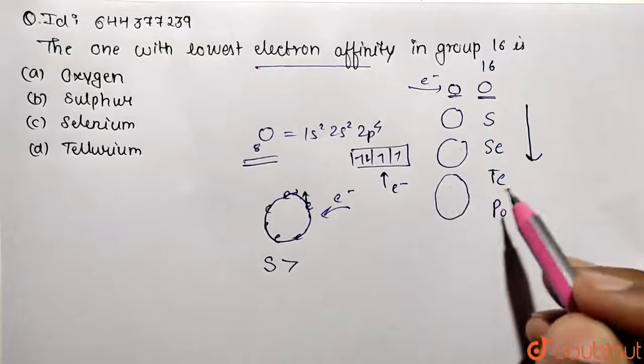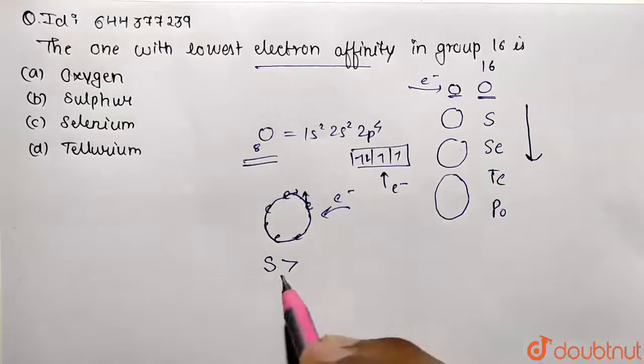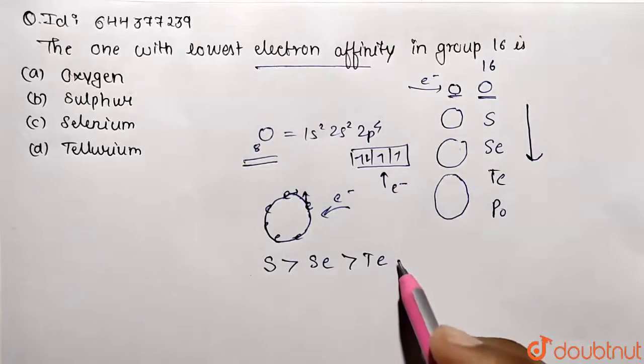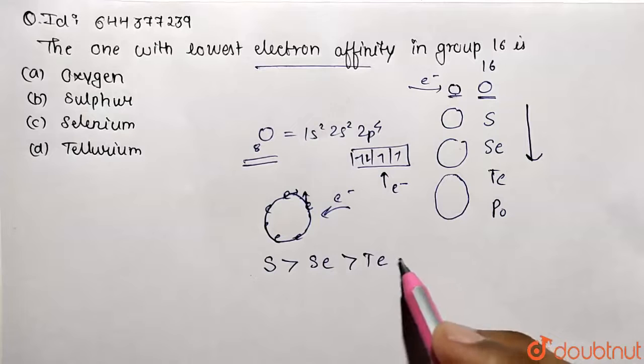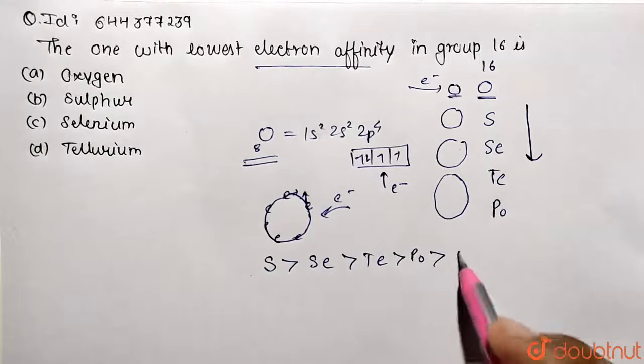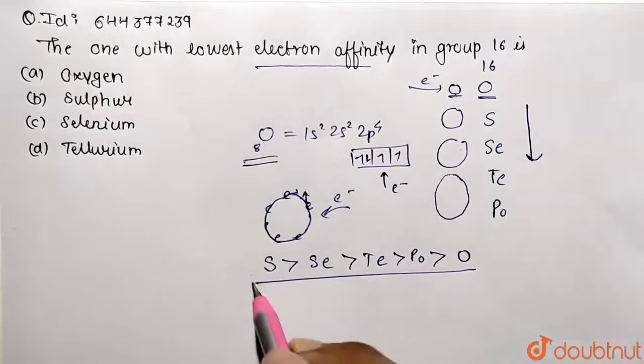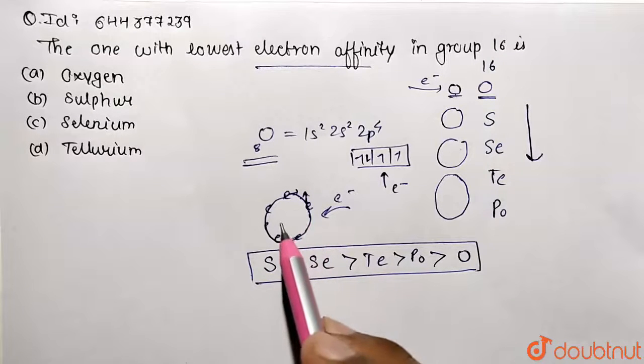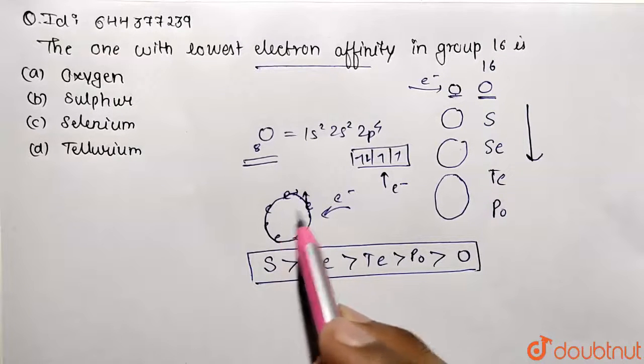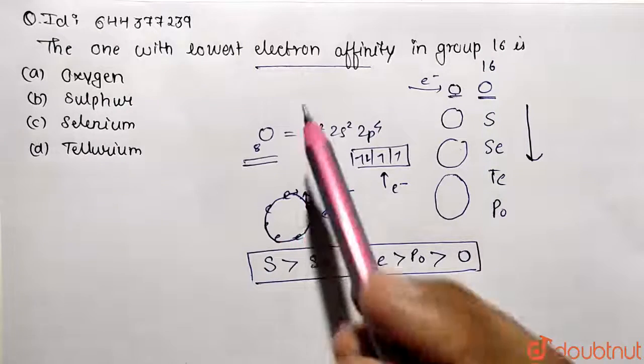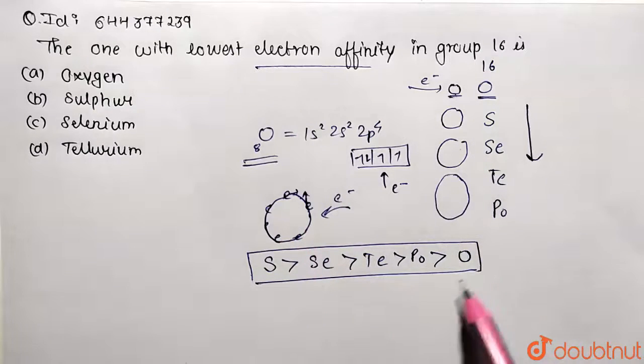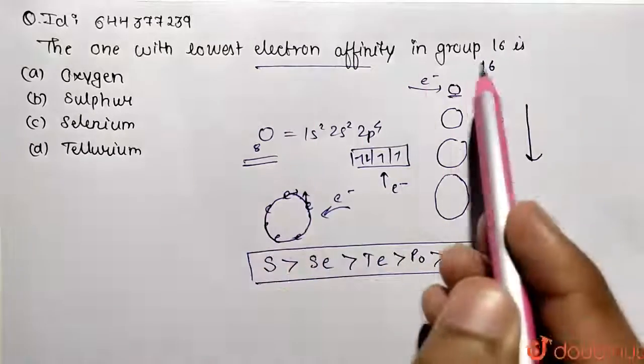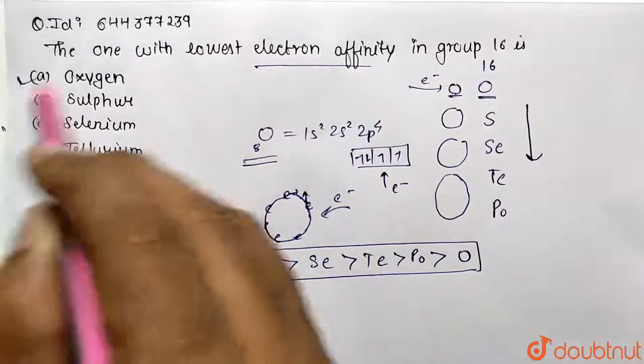So sulfur, then followed with selenium, then tellurium, and then polonium. And lastly, we are going to have oxygen. Oxygen has the lowest electron affinity due to the inter-electronic repulsion that is caused due to addition of an electron because of its small size. So that's why this exception comes in the case of oxygen, and lowest electron affinity in Group 16 comes out to be of oxygen.